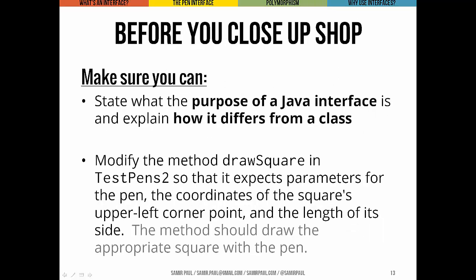We just looked at interfaces from the client side. The big ideas to take away: what is the purpose of a Java interface, and how is it different from a class? Did you see any implementation code in the pen interface? Also, open up the drawSquare method in testPens2 from the code for this lecture, and modify it so it takes parameters for the pen, the coordinates of the square's upper-left corner, and how long you want the side to be — then draw that square based on those inputs. That's it for today.